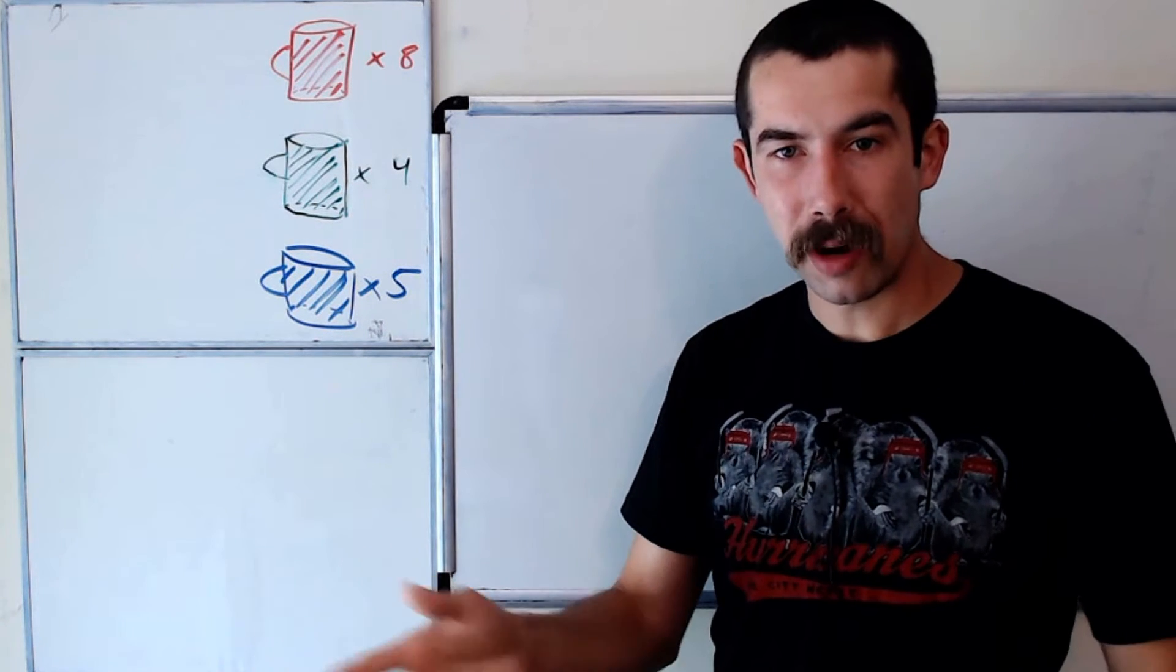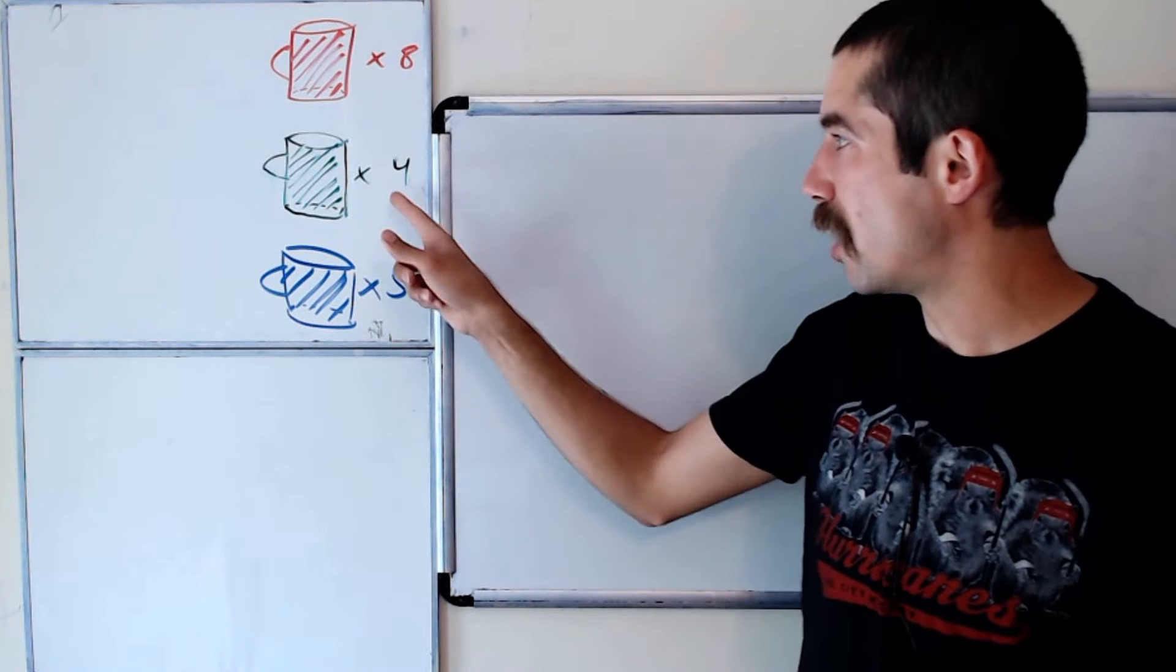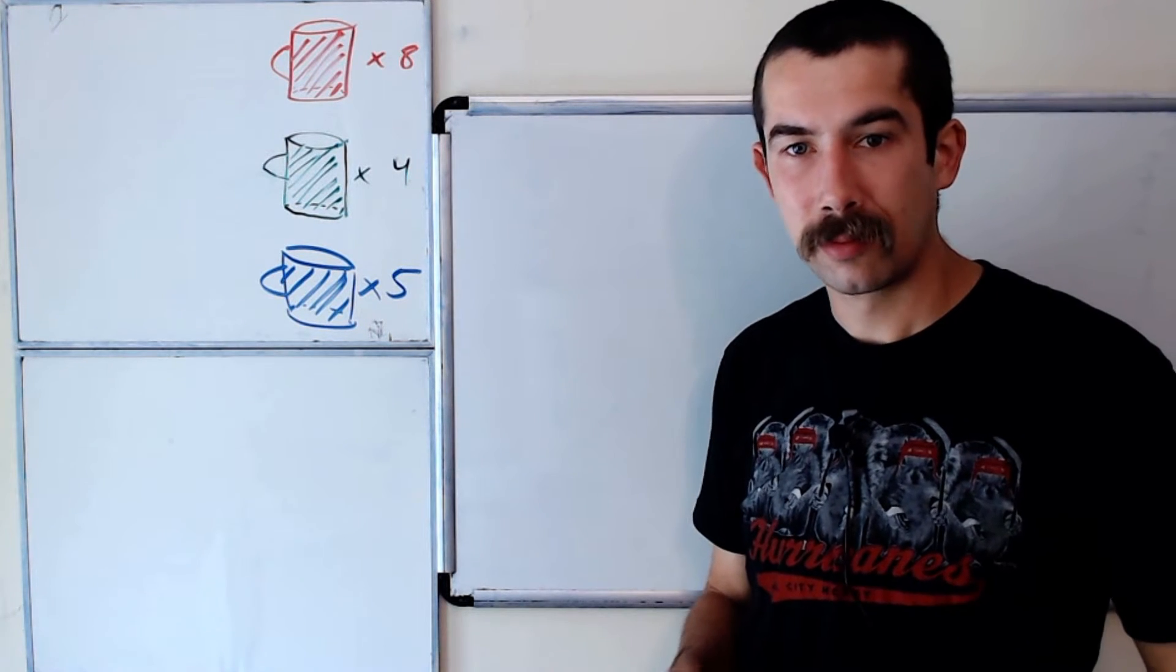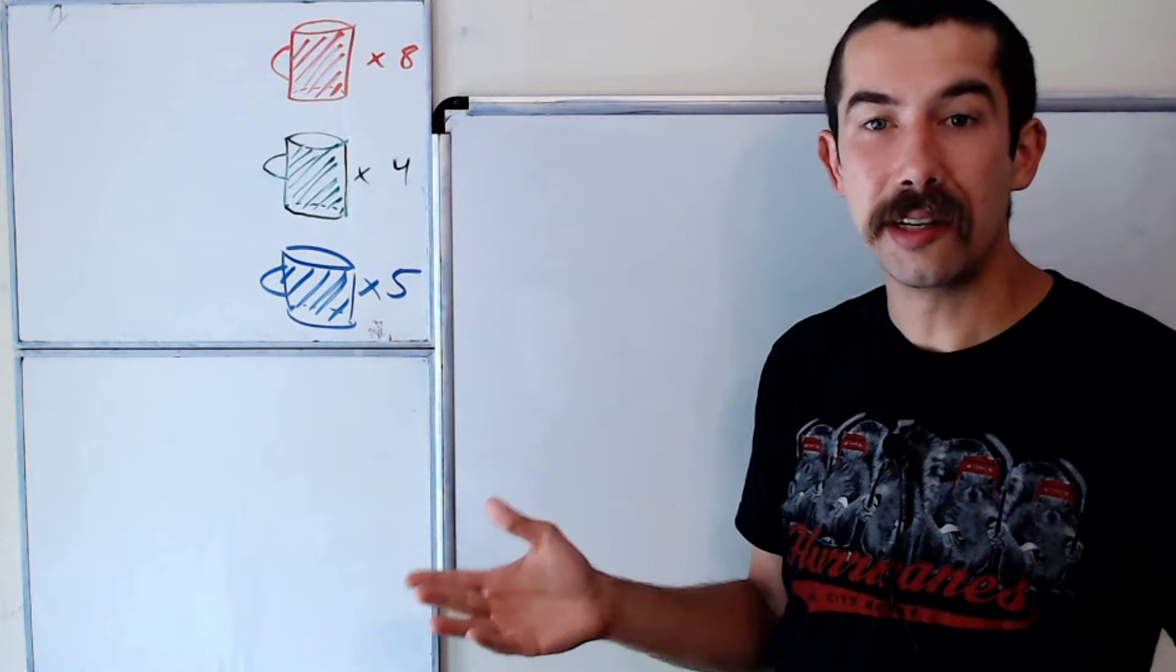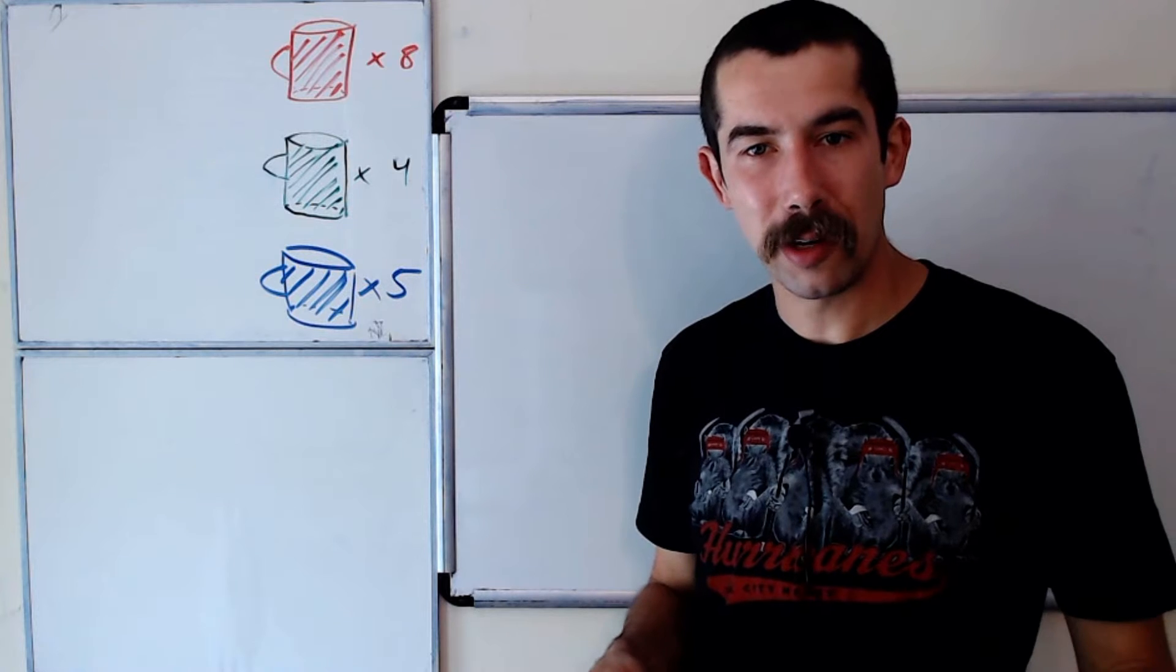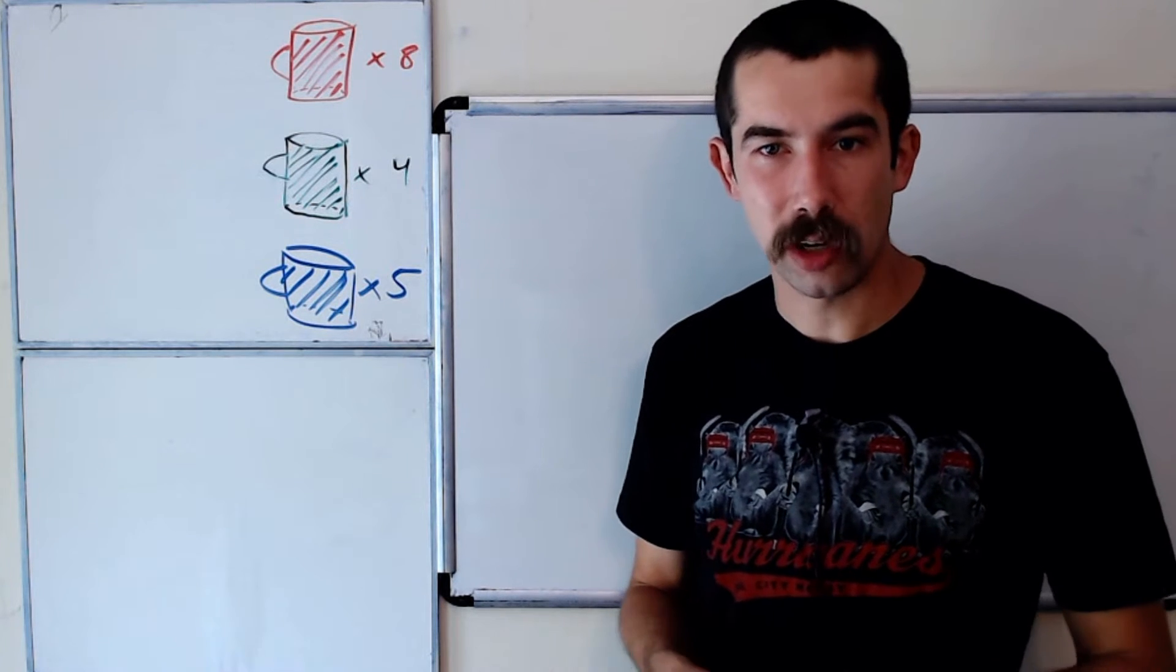And you want to rearrange them on the shelf such that no two green mugs are next to each other. How many ways can you do this? Pause the video and try it on your own, or you could just watch me solve it.